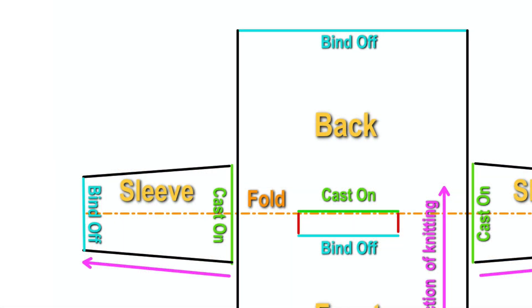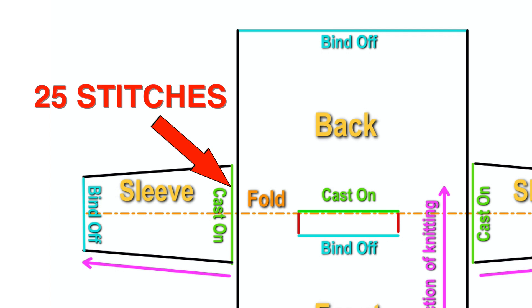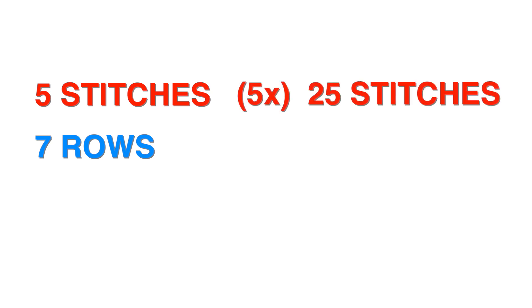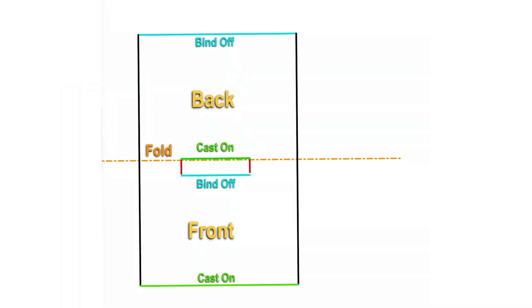Now we are going to try to solve this cast-on puzzle mathematically. Imagine that you need 25 stitches to cast on for your sleeve, according to your pattern — let's say a lacy pattern, cable pattern, whatever. If my five stitches fit into seven rows, then I need 25 stitches, which is five times more, along 35 rows, which is also five times more.